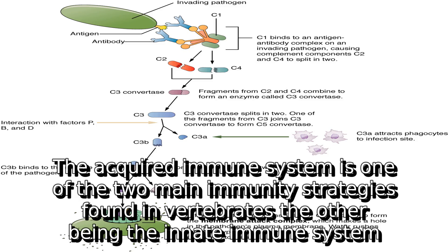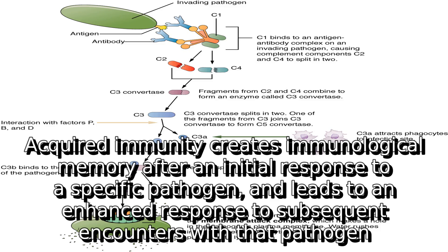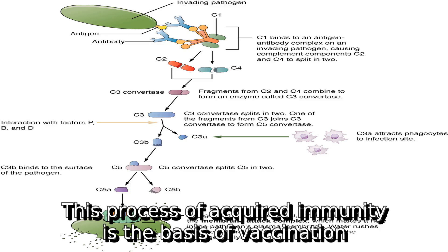The acquired immune system is one of the two main immunity strategies found in vertebrates, the other being the innate immune system. Acquired immunity creates immunological memory after an initial response to a specific pathogen and leads to an enhanced response to subsequent encounters with that pathogen. This process of acquired immunity is the basis of vaccination.